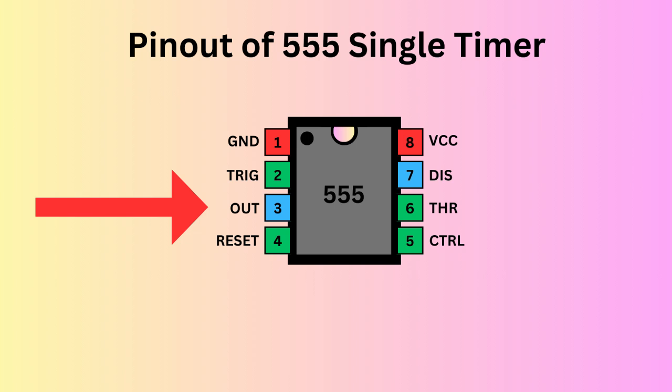Mono-stable, astable, or bi-stable. Pin 4, the reset pin, is used to reset the 555 timer's internal flip-flop. Pin 5 serves as the control pin, enabling you to adjust the threshold voltage levels used by the internal comparators to set and reset the flip-flop.